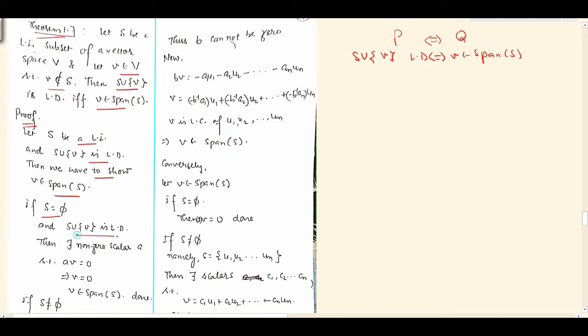Suppose S union v is linearly dependent. Then of course, there exists some non-zero scalar A. Since A is non-zero, multiply by A inverse, then A inverse A times v equals A inverse times 0. Calculating this, you get v equals 0. Since v equals 0, span is itself a vector space, a subspace of V, so it contains the 0 vector. This 0 belongs to span of S, and 0 is nothing but here v. So v is in span of S. We are done for the empty case.